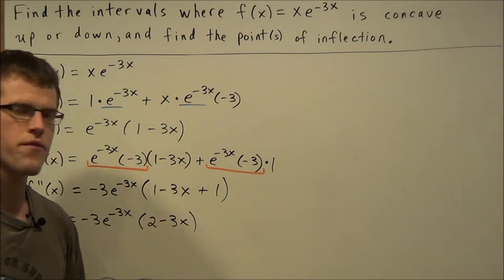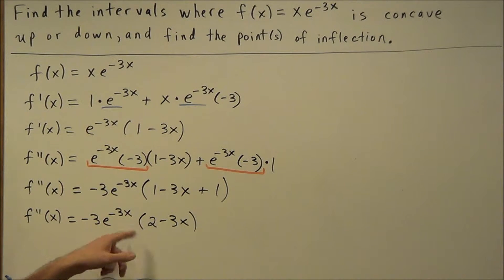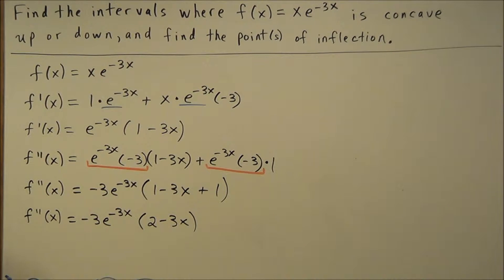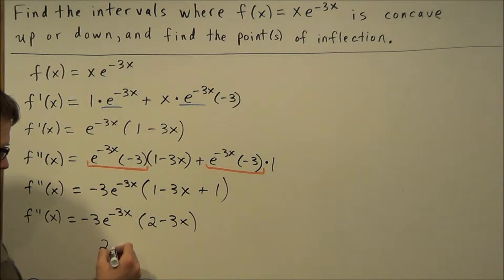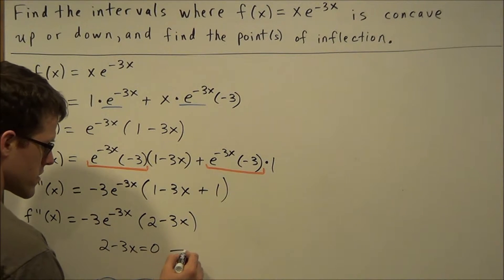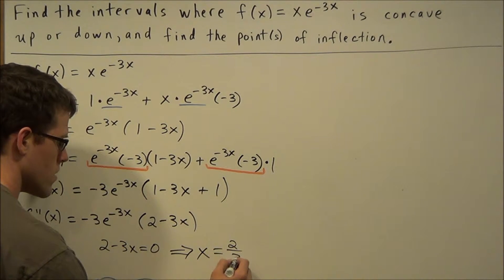If we look for the zeros of the second derivative, the first factor is not going to yield any zeros because e to the negative 3x can never equal 0 — this term is always positive, so it will never cross the x-axis and won't give us a root. So we set the second factor equal to 0 and solve: 2 minus 3x equals 0. Adding 3x to both sides and dividing by 3, this tells us the zero occurs at x equals 2 thirds.